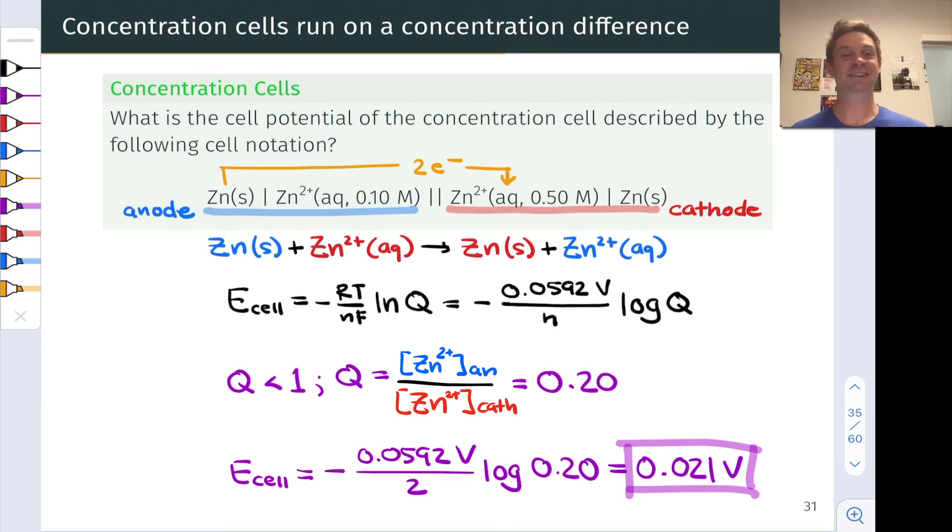In essence, it takes a very small value of Q—much, much less than 1—to get a useful working voltage out of a concentration cell in most cases. And when you get to very tiny values of Q, the ideality built into the Nernst equation starts to break down. So they're not that functionally useful, but they're a great application of our theory of the chemical thermodynamics of galvanic cells.